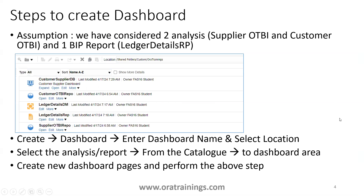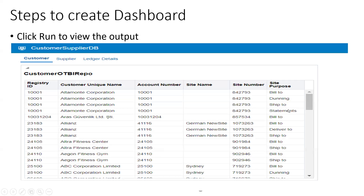Now let us understand the steps involved to create a dashboard. In our example today, we have assumed we have two analyses and one report, and we'll be creating a dashboard for these three reports. We'll create a dashboard by clicking on the create icon, then clicking on dashboard, mentioning the dashboard name and the location to store it. Then create or select the analyses or reports from the first step. By default the dashboard will create a single page, and you can drag and drop the analyses or reports. If you want an independent page for each, you have to create the pages accordingly, then click on view to run and see the output.